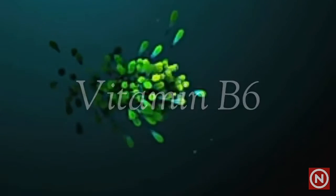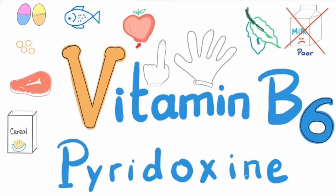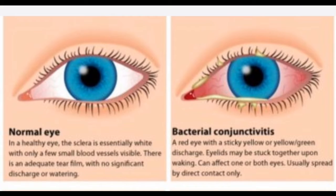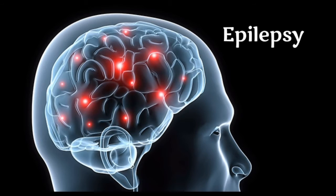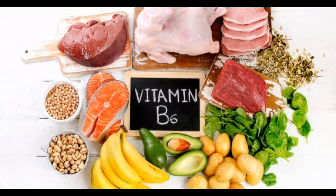Vitamin B6: constituents — pyridoxine, pyridoxal, pyridoxamine. Deficiency disease — dandruff-like eruptions, pink eye, epilepsy. Sources — potatoes and other starchy vegetables, fruit, etc.